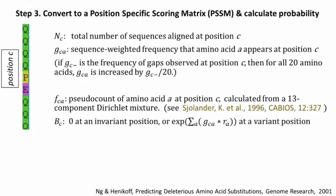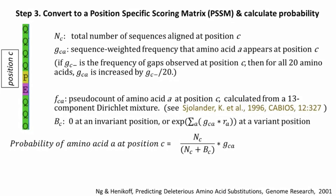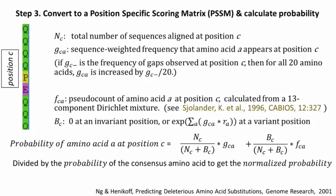At an invariant position, B(C) is set to zero. At other positions, B(C) is defined as the exponential function of the sum over all 20 amino acids of the product of G(C,A) with the rank R(A) of amino acid A among all amino acids in terms of similarity with the reference amino acid. So the probability of seeing amino acid A at position C in nature is defined as the weighted average of the observed amino acid frequencies in the alignment and the estimated unobserved frequencies. This is then divided by the probability of the consensus amino acid at the position to get the normalized probability of seeing an amino acid at position C in nature.